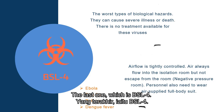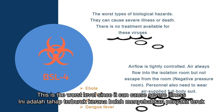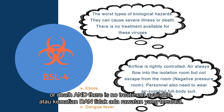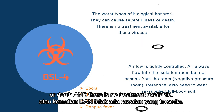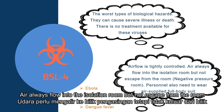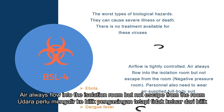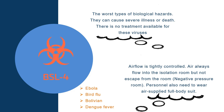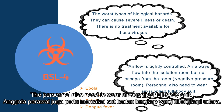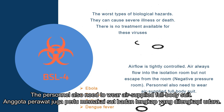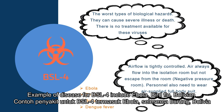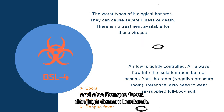The last level is BSL-4, the worst level, since it can cause severe illness or death and there is no treatment available. The floor of the room is strictly controlled. Air always flows into the isolation room but cannot escape, which is called a negative pressure room. Personnel also need to wear an air-supplied full body suit. Examples of diseases for BSL-4 include Ebola, bird flu, Bolivian hemorrhagic fever and dengue fever.